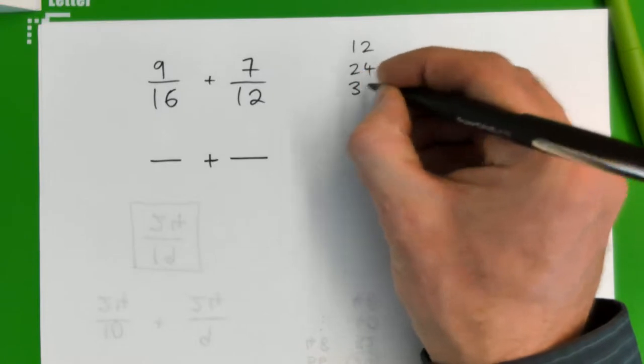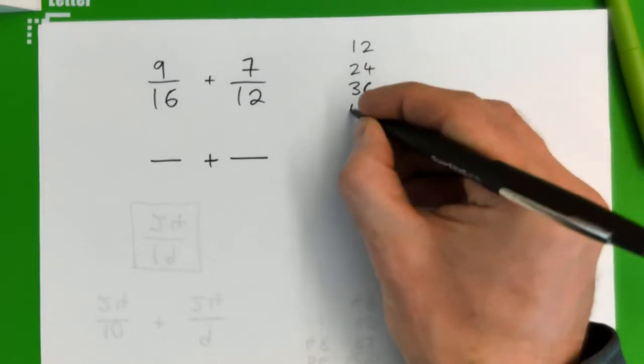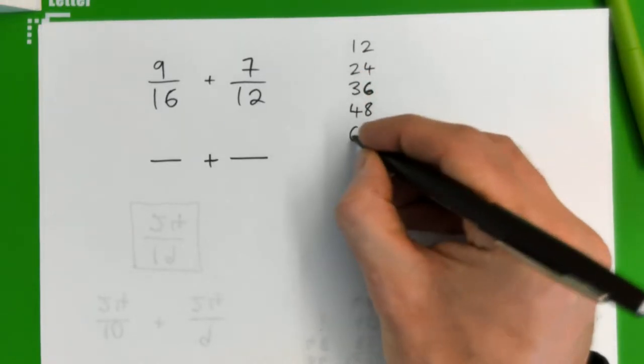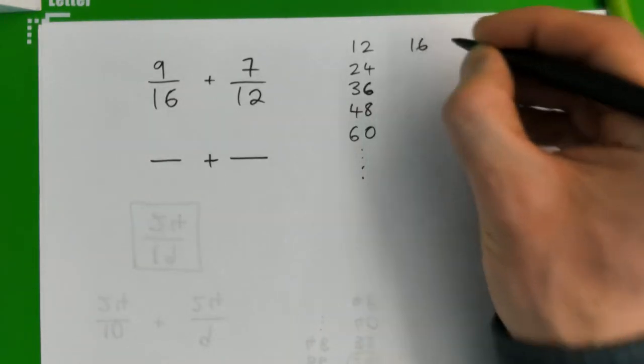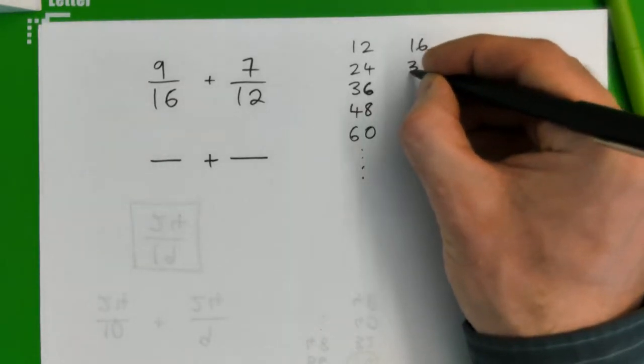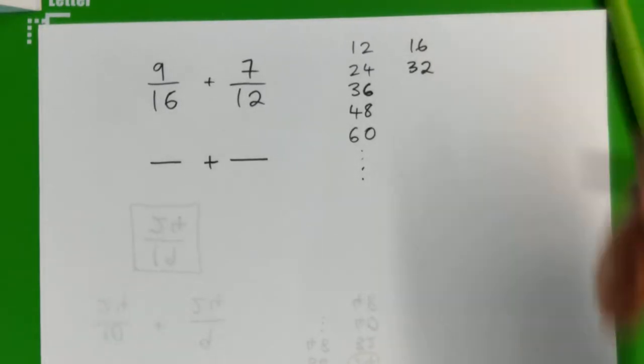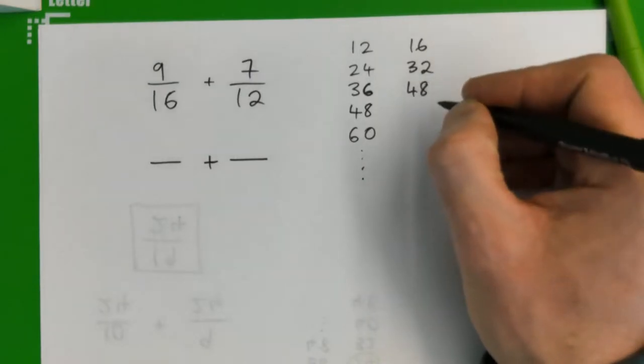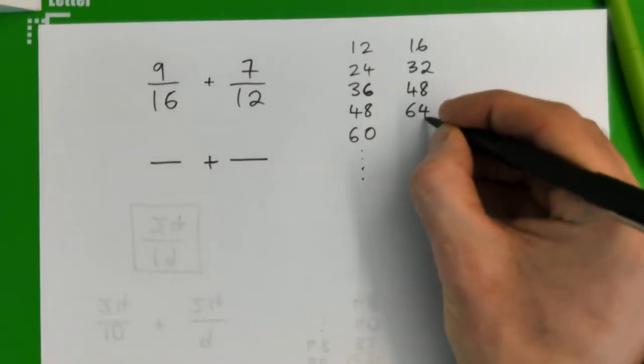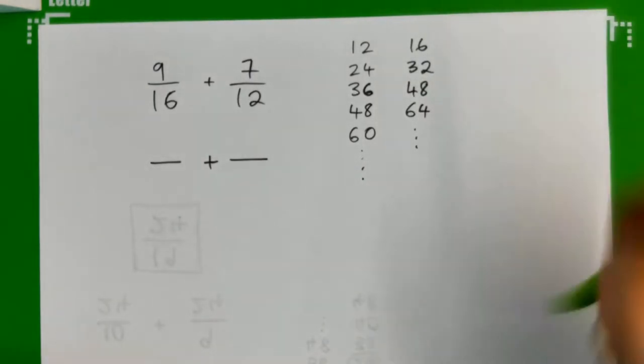12, 24, 36, 48, 60 and so on. And then for 16, we have 16, then 32, and then what? 48, and then 64 and so on. But what we can see is...